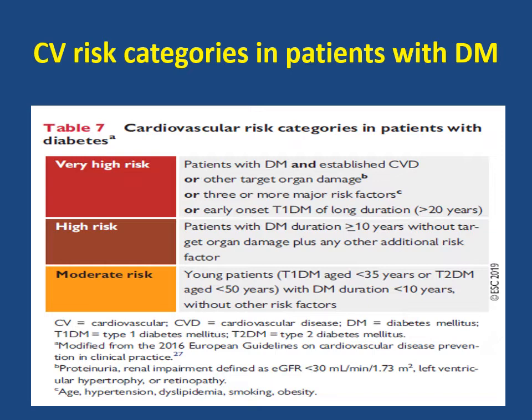The second category is the high risk category, which includes patients with diabetes duration more than 10 years without target organ damage plus any other additional risk factors, one or two risk factors. The last category is the moderate risk category, which includes young patients with diabetes duration less than 10 years and without other risk factors.